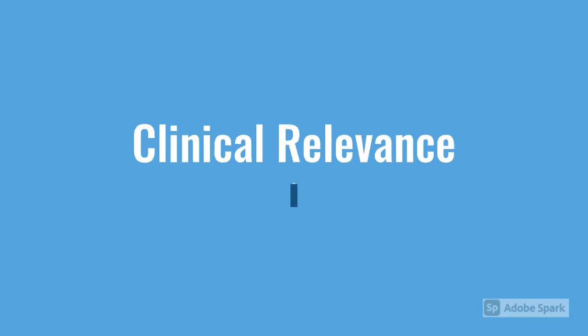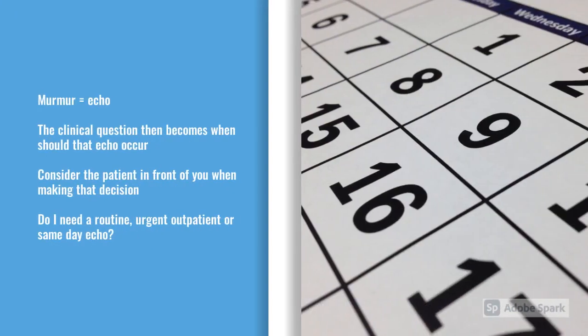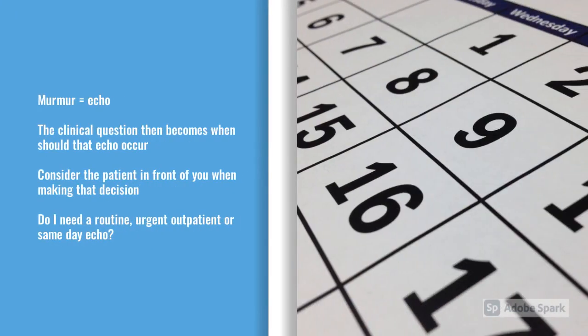What's the clinical relevance of finding a murmur? Detecting a murmur is all well and good, but you need to get an echo to determine if it's a valve pathology, whether there's a structural cause, and whether there are any complications including reduction in ejection fraction or increased pressures. You need to consider: does the patient need an echo on the same day, an urgent two-week outpatient echo, or can it be done routinely in about six weeks?